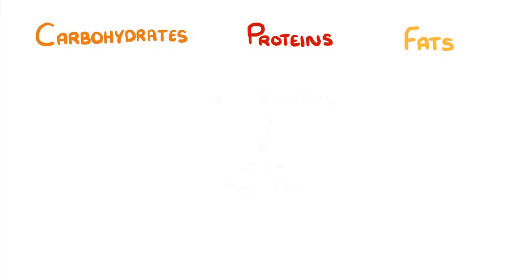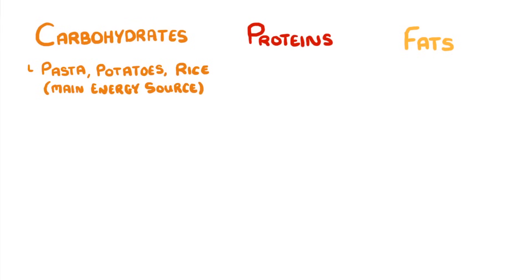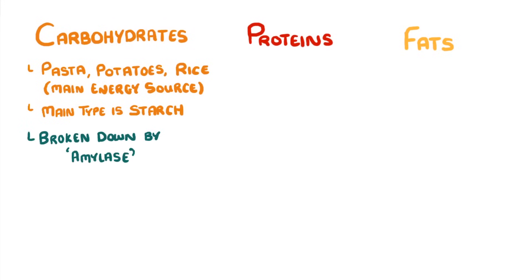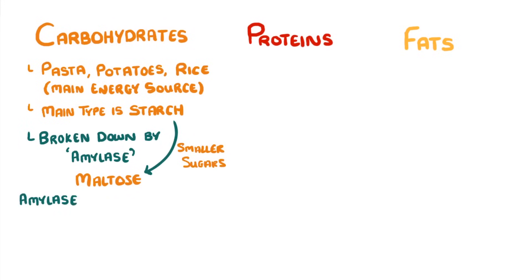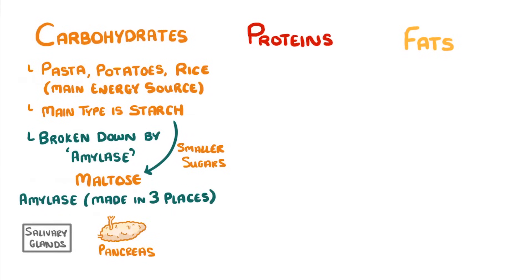Carbohydrates are found mainly in foods like pasta, potatoes and rice, and our body uses them mainly as an energy source. The main type of carbohydrate is starch, and it's broken down by an enzyme called amylase into smaller sugars such as maltose. Amylase is made in three different places: the salivary glands of the mouth, the pancreas and the small intestine. But in all cases, it acts to break down starch.